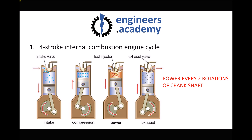The important thing here is we only deliver power every two rotations of the crankshaft. During the first rotation we draw air in and compress it. During the second rotation we deliver power and then exhaust the gas. So for the third rotation we draw in and compress air, and for the fourth rotation we ignite the fuel, create power, and exhaust the gases — a power stroke every two revolutions of the crankshaft.